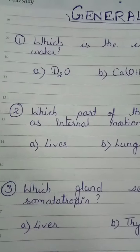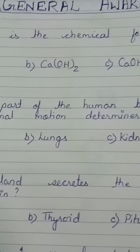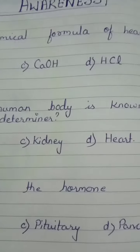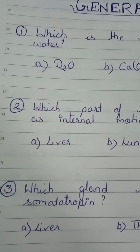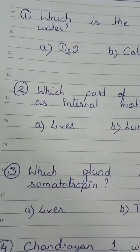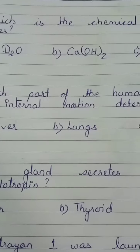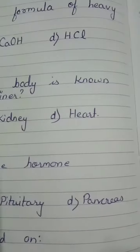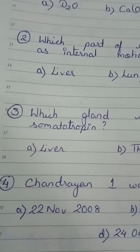Third question: which gland secretes the hormone somatotropin? Options: liver, thyroid, pituitary, and pancreas.